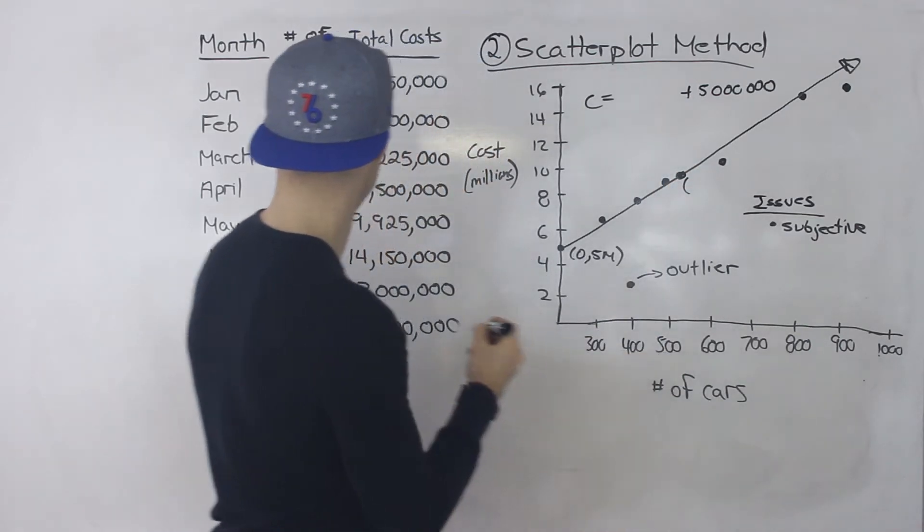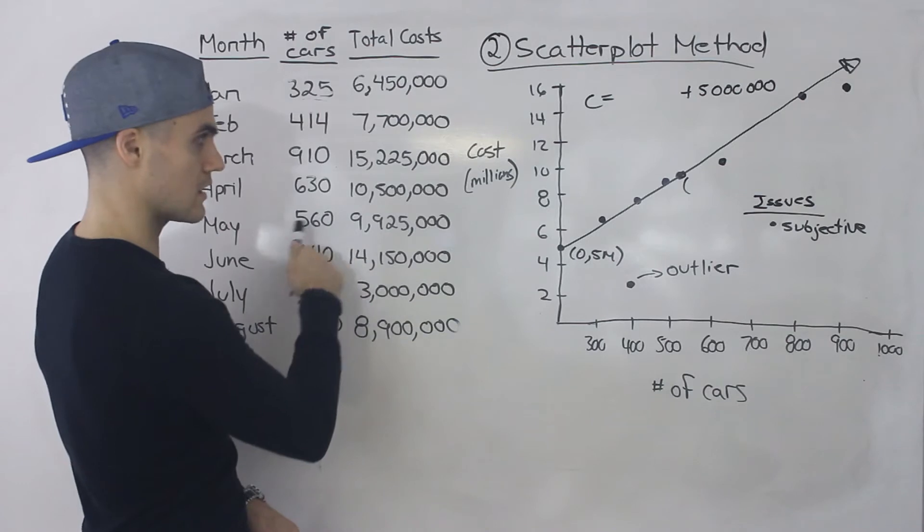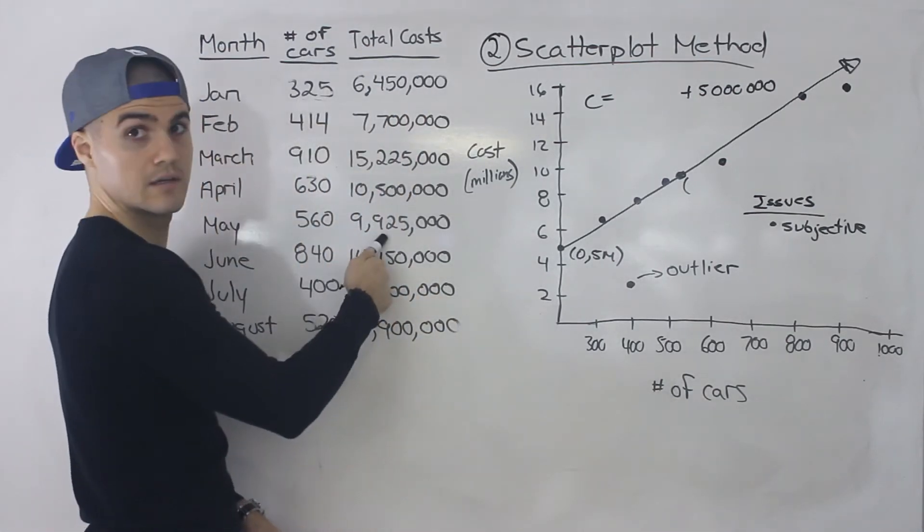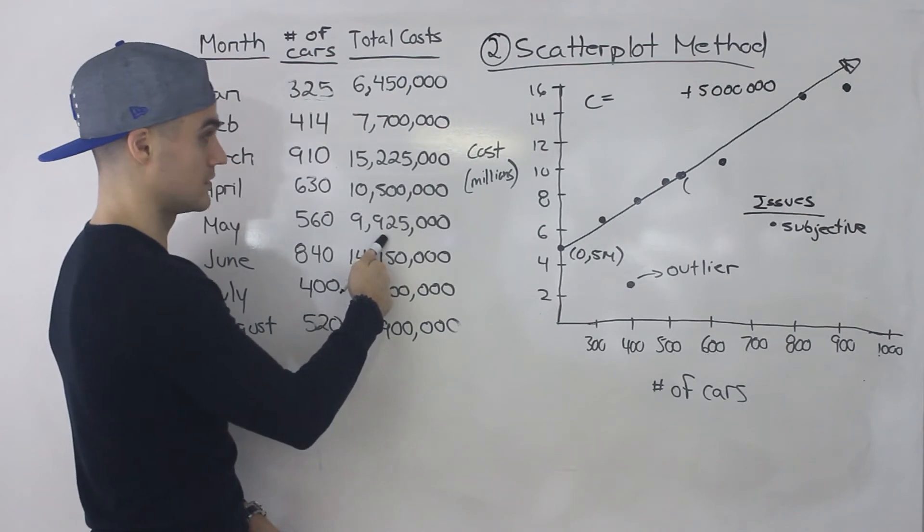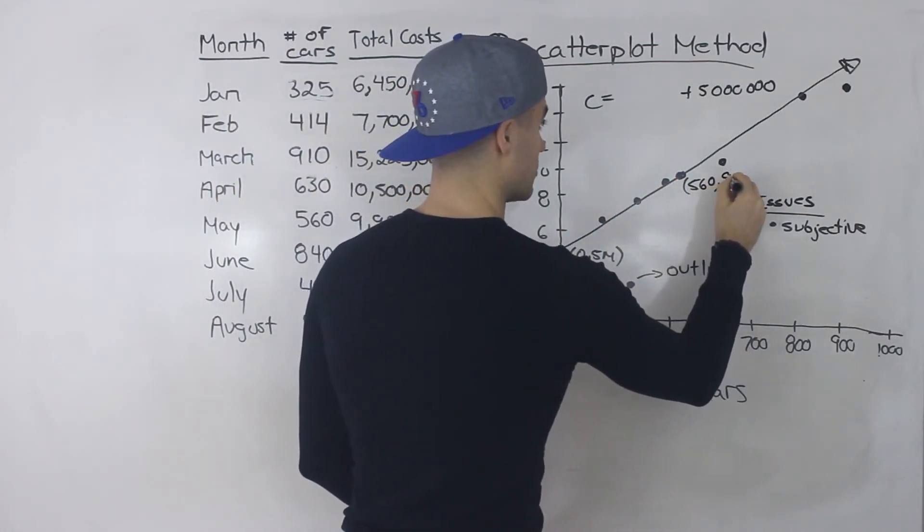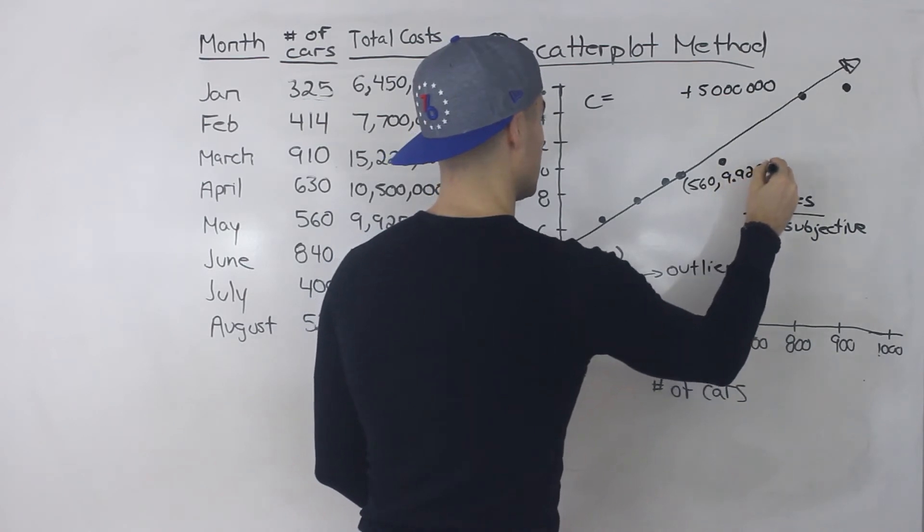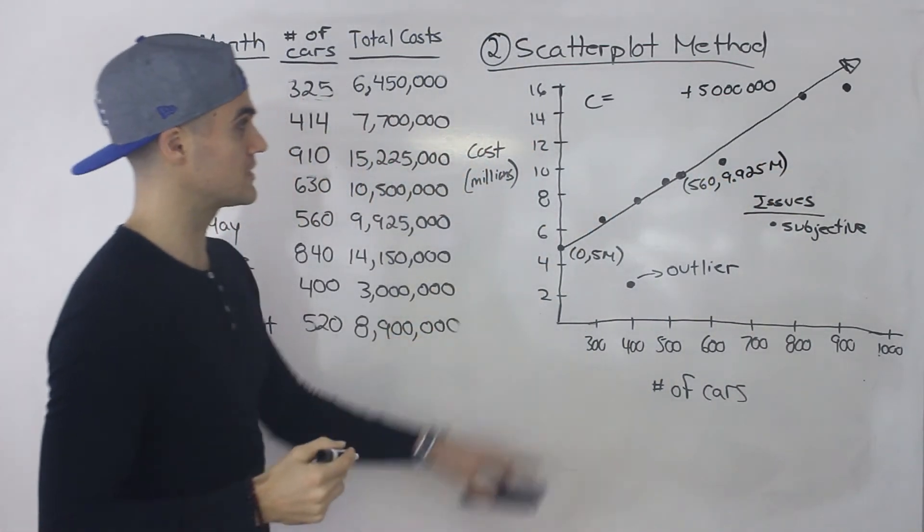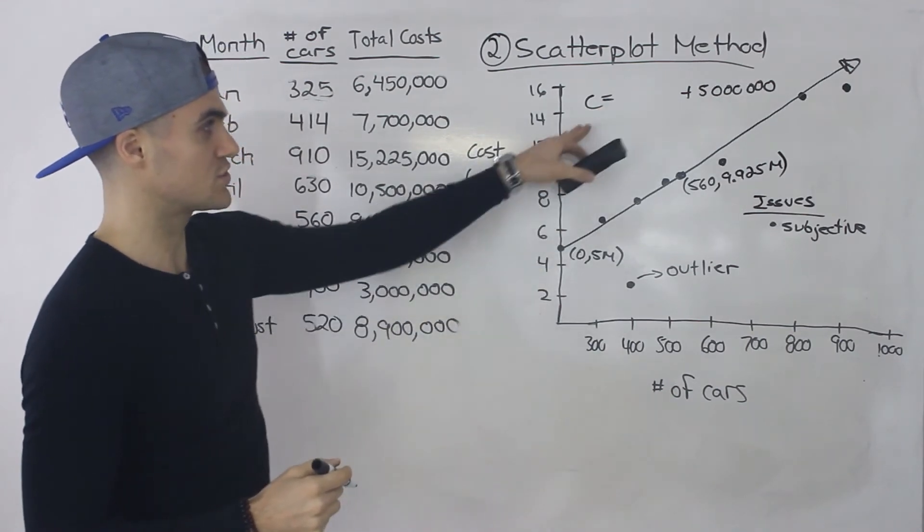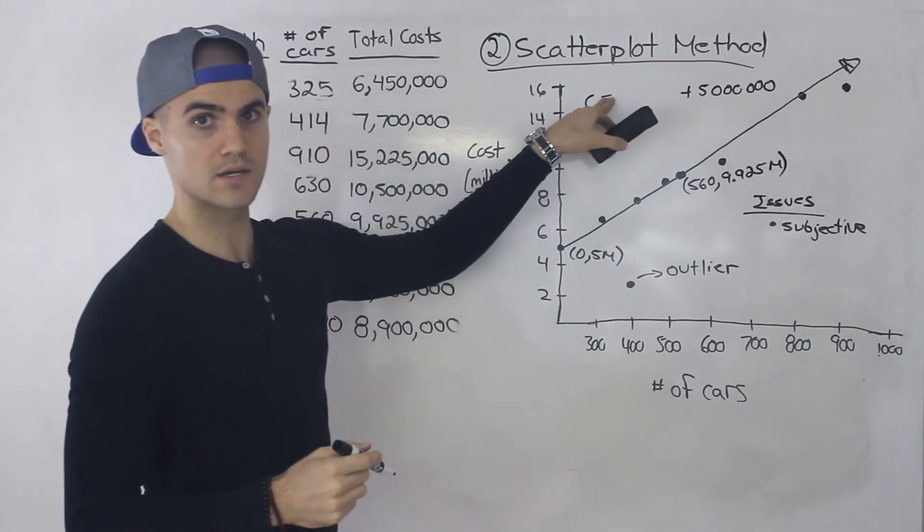This point was five sixty nine point nine to five million. Right so we got this five sixty and then nine point nine to five million. You could maybe find the slope between those points to get that m value. Right so basically you're just estimating this equation.